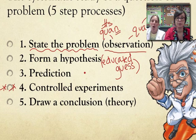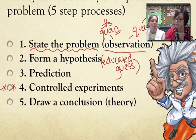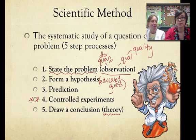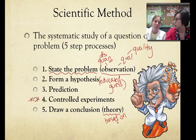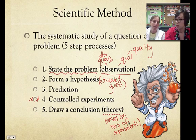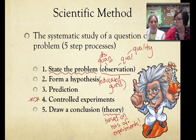The last step is to draw a conclusion — it comes at the end. Sometimes you'll hear people talk about scientific theories, which are a conclusion based on lots of experiments. If we're only doing one experiment, we call it a conclusion. But if every person at CHS was doing the same experiment and got the same data, we could eventually call that a theory, because lots of different pieces of evidence are supporting that particular topic.